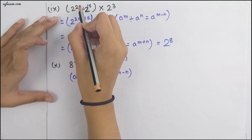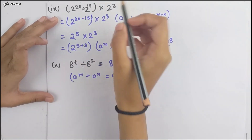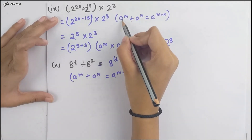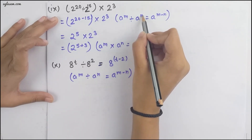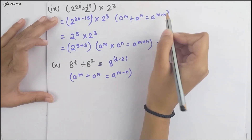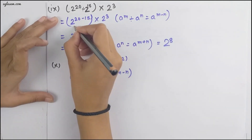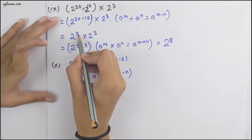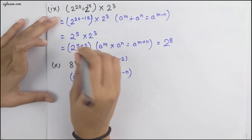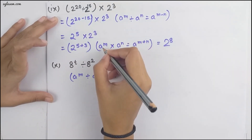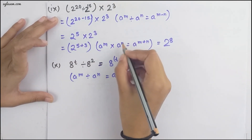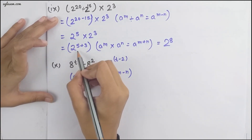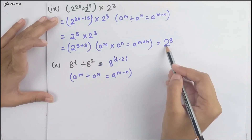Moving to the next part, we have 2 raised to the power 20 divided by 2 raised to the power 15, into 2 raised to the power 3. Using a^m ÷ a^n = a^(m−n), we get 2^(20−15) × 2^3 = 2^5 × 2^3. Then using a^m × a^n = a^(m+n), we get 2^(5+3) = 2 raised to the power 8.